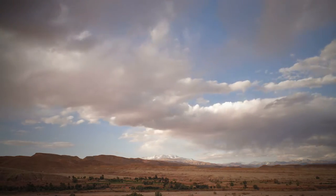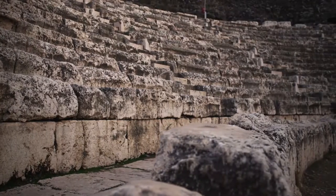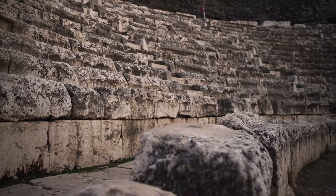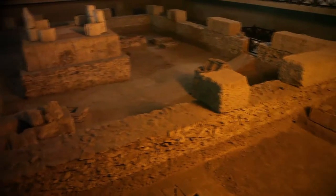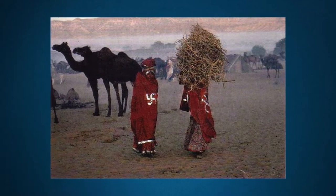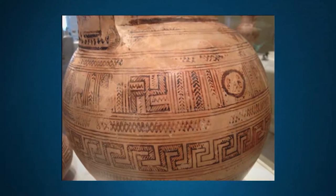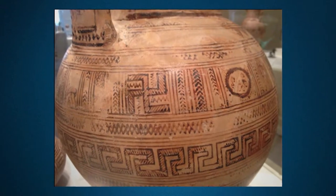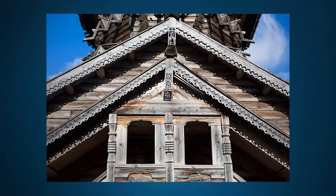By its nature, the swastika is not only the most widespread, but also the most ancient graphic symbol. Many ancient people portrayed it on their clothes, weapons, and household items, and even decorated with it in their homes and churches.